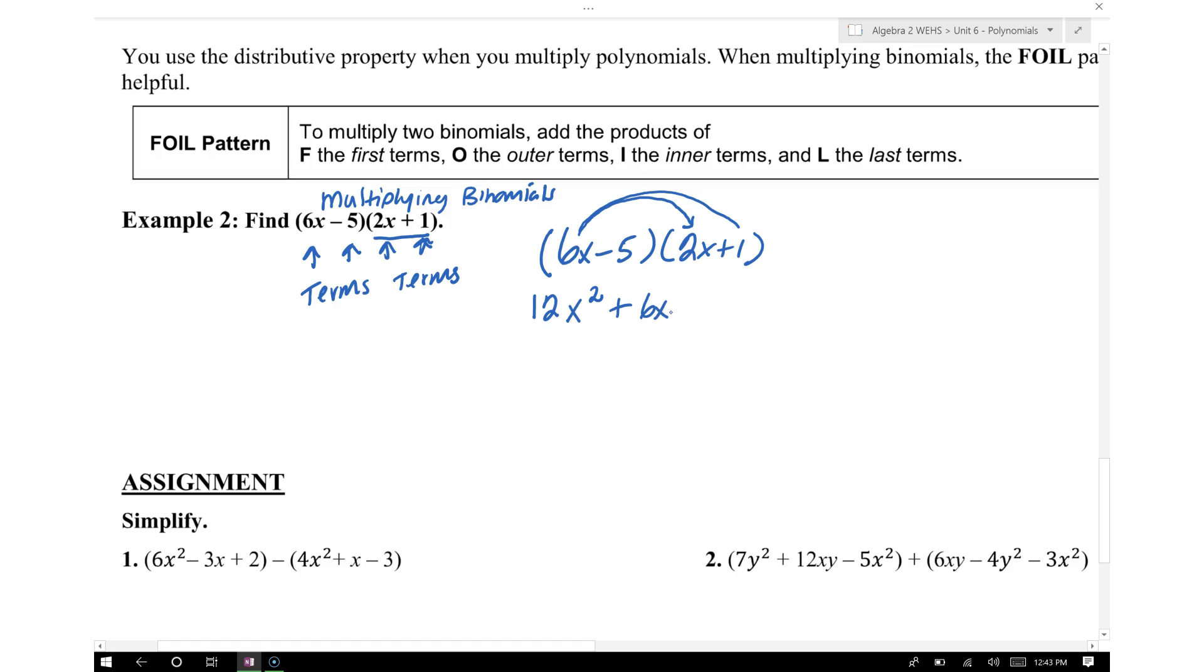The inner terms is negative 5 times 2x, which is negative 10x. That's for the inner term. We have inner, we have outer, and we have the first terms. Then the last terms that we're going to multiply is negative 5 times 1, which gives us negative 5.